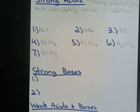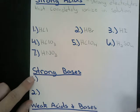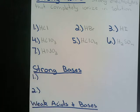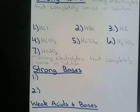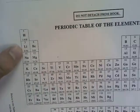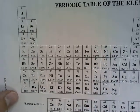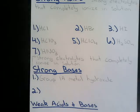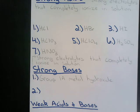Strong bases are also strong electrolytes that completely ionize in solution. Strong bases can have two different categories. One way we know something is a strong base is if it's a group 1A metal hydroxide. Group 1A metals go from lithium all the way down to francium. Anything in that first column that combines with a hydroxide is considered to be a strong base.